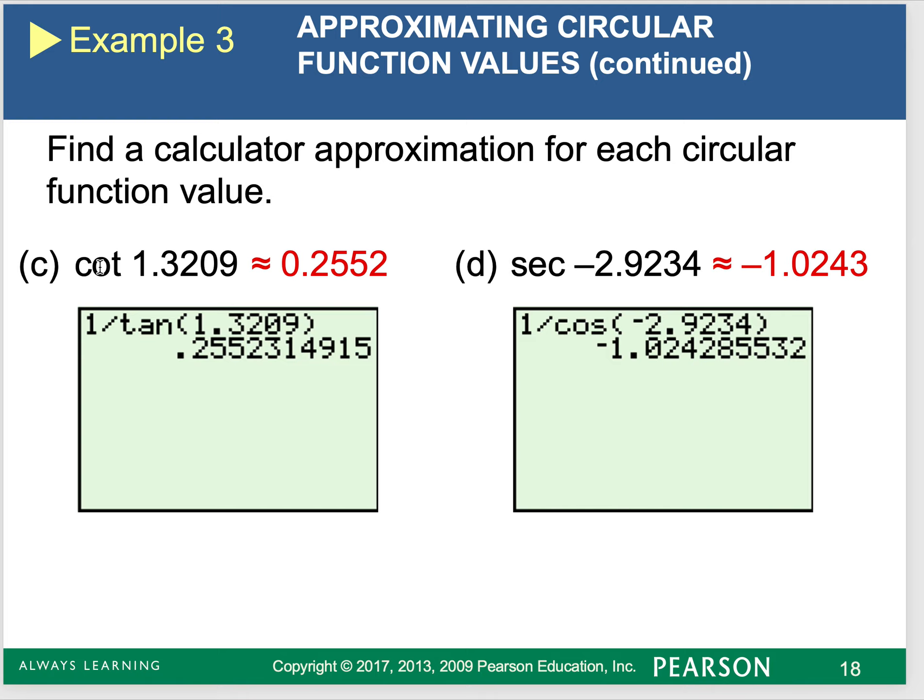In Web 2.0, there is a cotangent, a secant, and a cosecant button. So if that's the calculator you're using, you can just directly type in cotangent 1.3209.